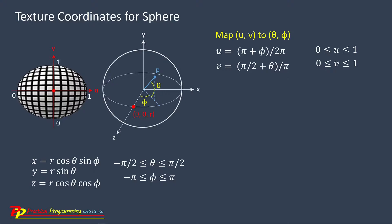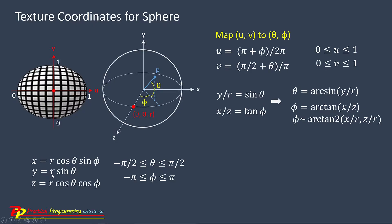Now our task is to find theta and phi. From the relation, Y equal to R sine theta, so theta equal to arc sine of Y over R. We can also find that phi equal to arc tangent of X over Z. In order to describe this angle phi correctly in four quadrants, we use arc tangent 2 with inputs X and Z separately.